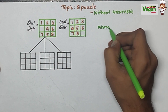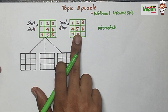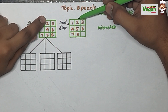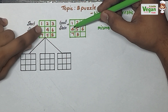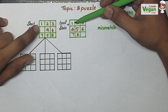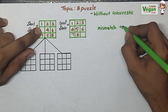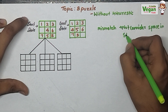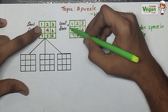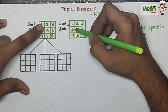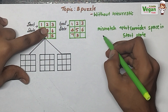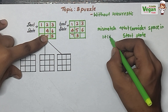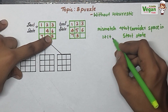The heuristic value is found by calculating the mismatch between the present state and the goal state. Comparing the start and goal state: 1 and 1 are in the same place, 3 is also in the same place. Here 4 must be there but space is there. Note that you must not consider the space in the mismatch for the start state. Here it is 4 and here it is 5 — one mismatch. Here 6 and 6 are okay. Next, 7 and 7 are fine, but 5 versus 8 is another mismatch, and 8 versus space is another mismatch.